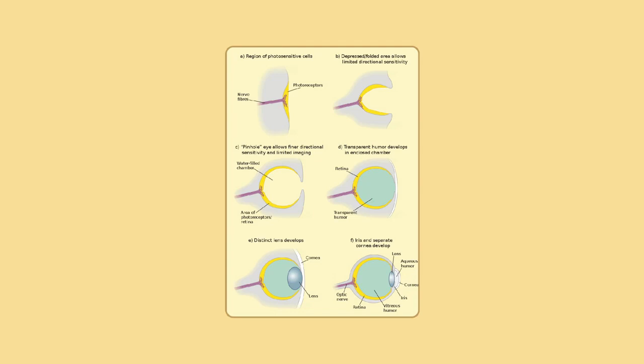The movements of the eye are controlled by six muscles attached to each eye and allow the eye to elevate, depress, converge, diverge, and roll. These muscles are both controlled voluntarily and involuntarily to track objects and correct for simultaneous head movements.